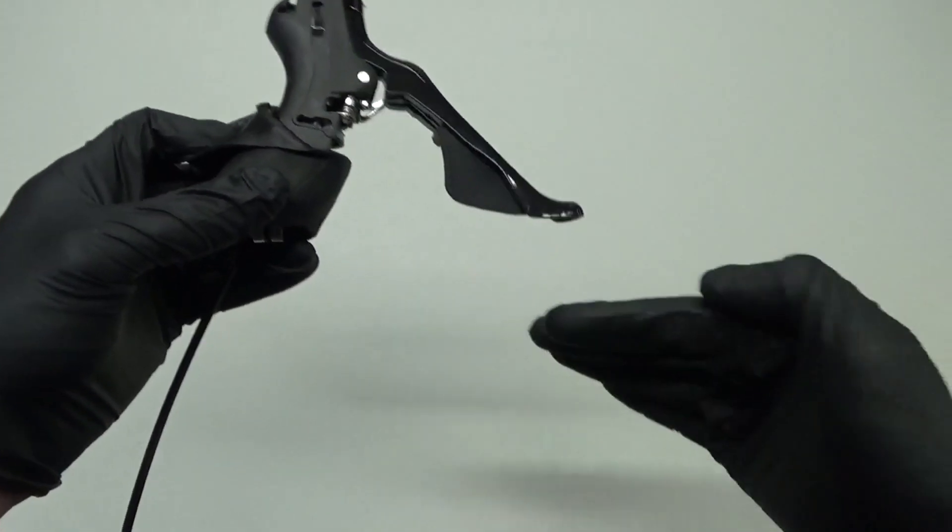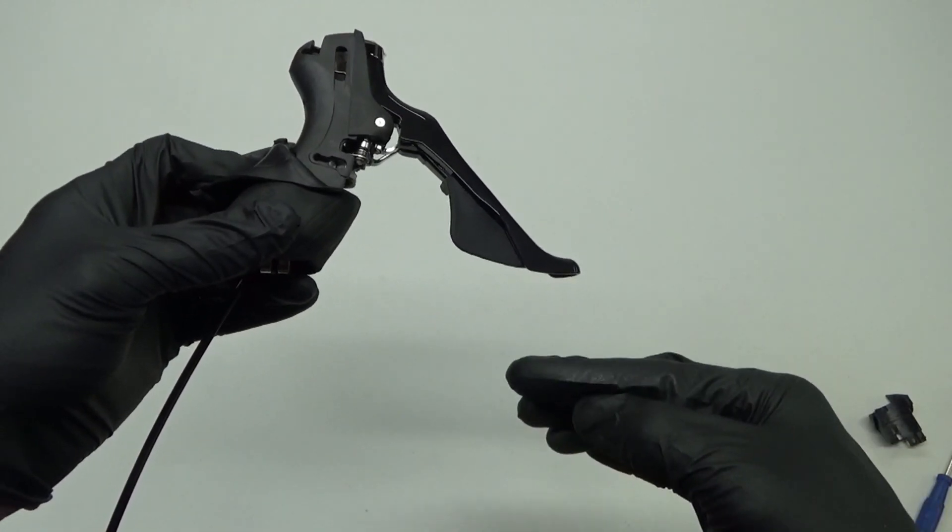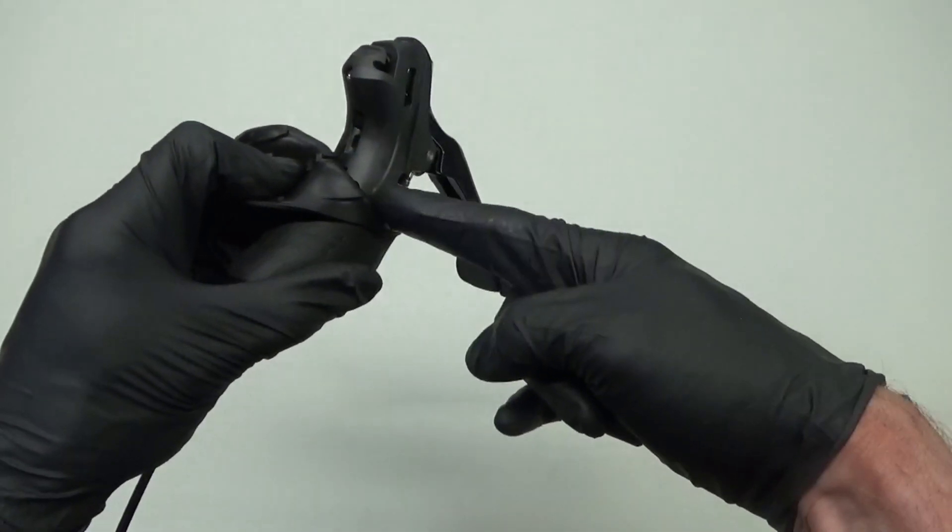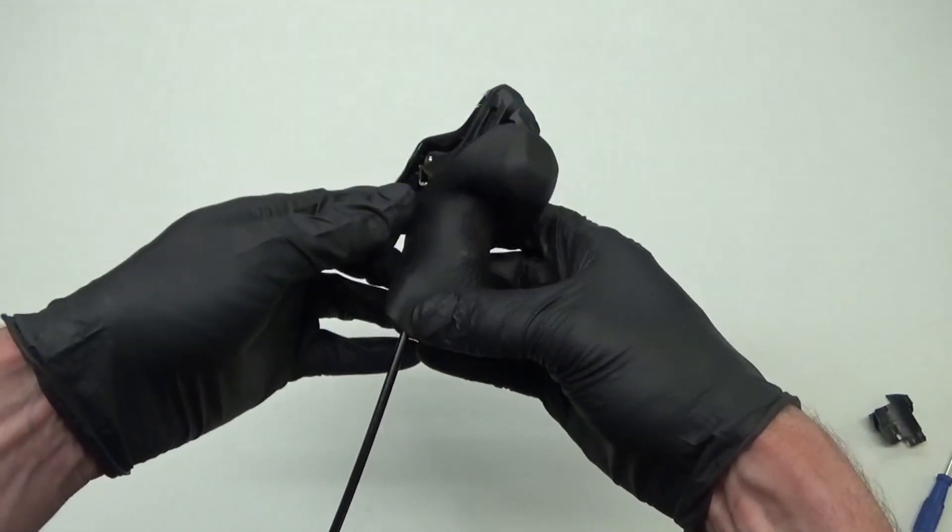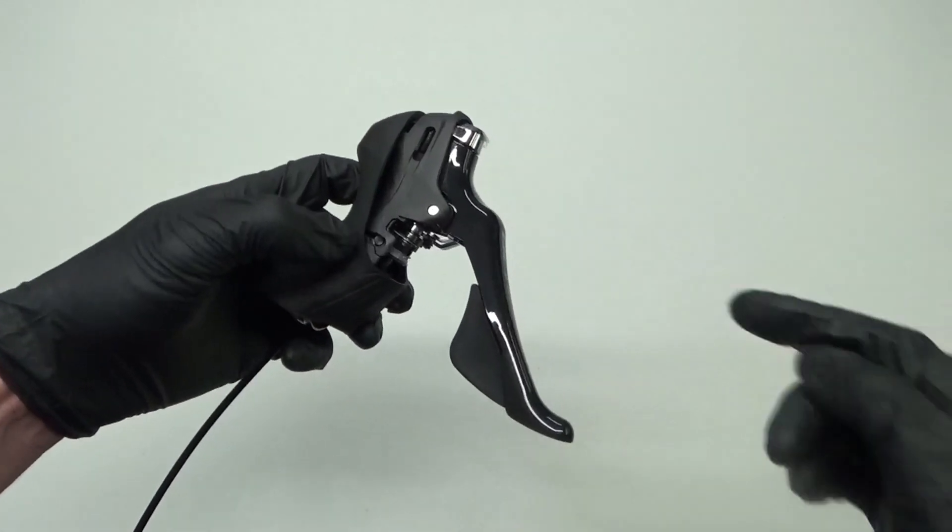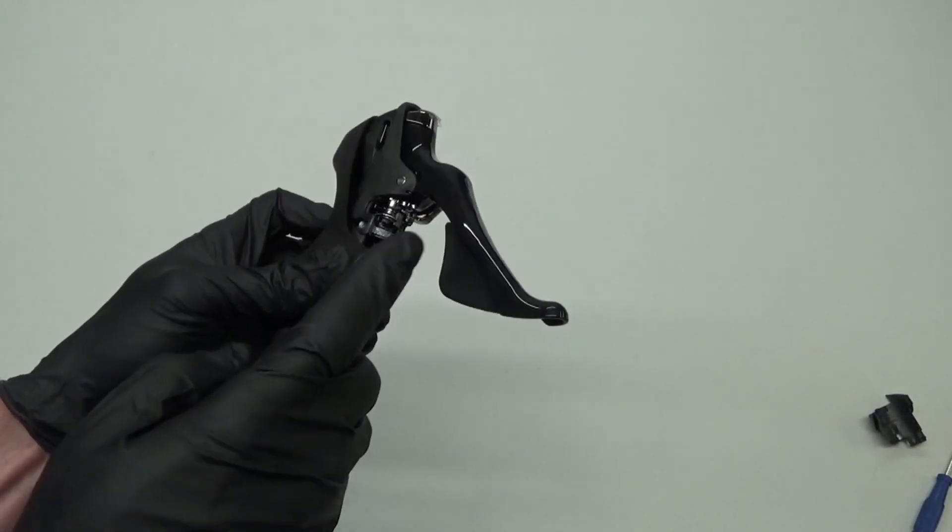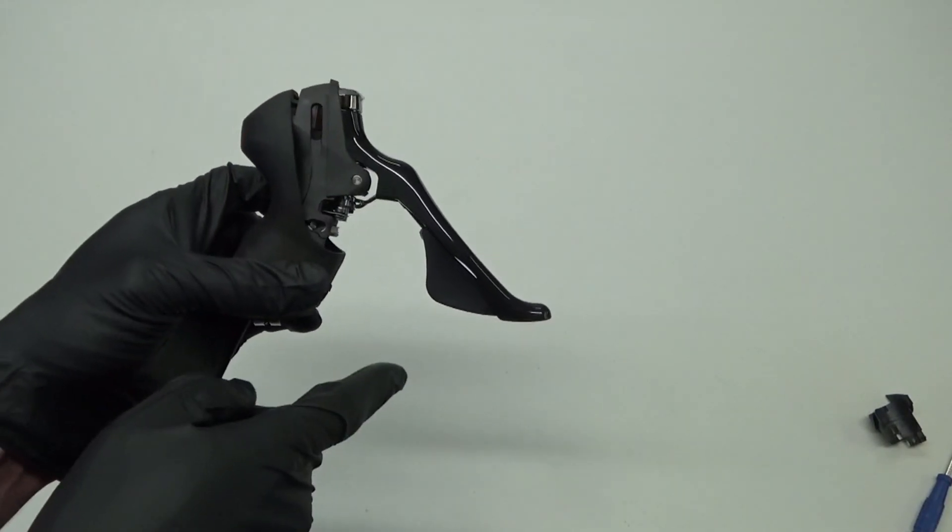So to insert a new cable, you need it shifted down to your 11 sprocket at the back, the smallest one. Then that way the cable goes through and out the other side. And only in that position will you be able to put a new cable through. But normally what happens is when it's going to break, it breaks when you're shifting up the cassette.